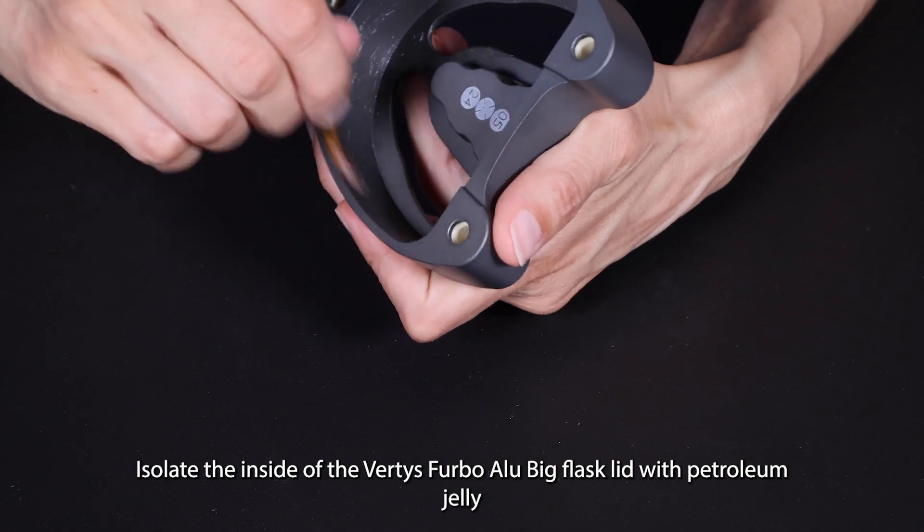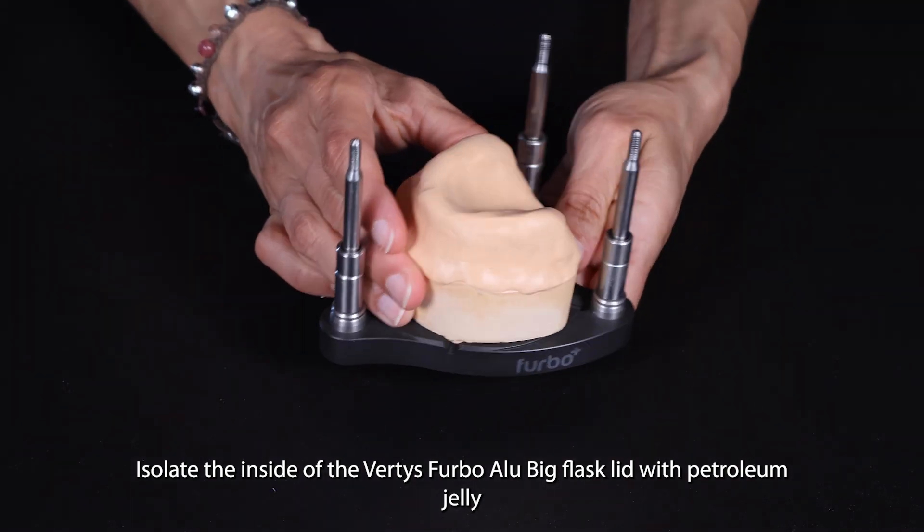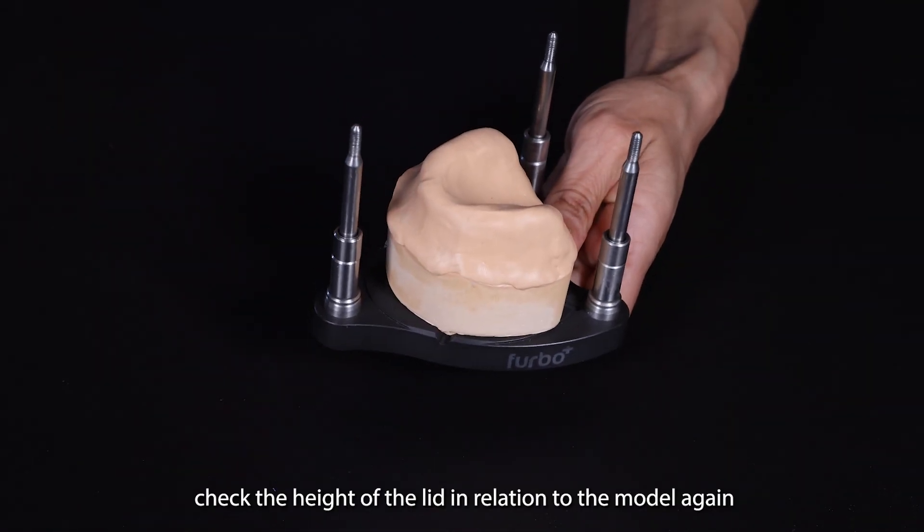Isolate the inside of the Vertis Furbo Lube Big Flask lid with petroleum jelly and check the height of the lid in relation to the model again.